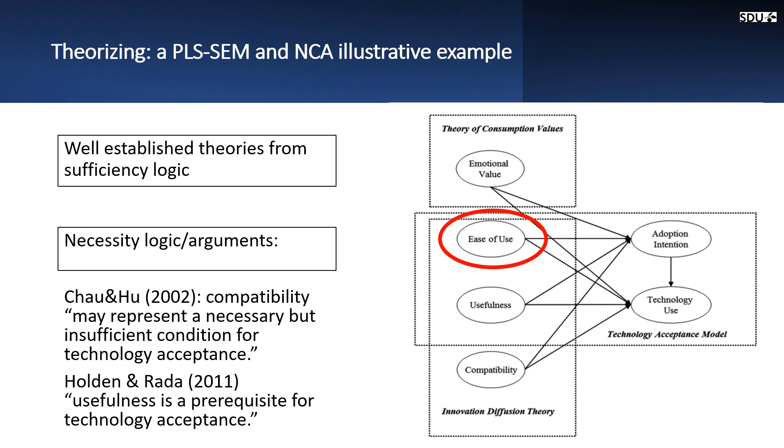What should we conclude? Should we say that ease of use is not important and then we should not care about it at all? But the author found that the ease of use is a necessary condition, a must-have factor. So without it, the adoption intention will not happen.